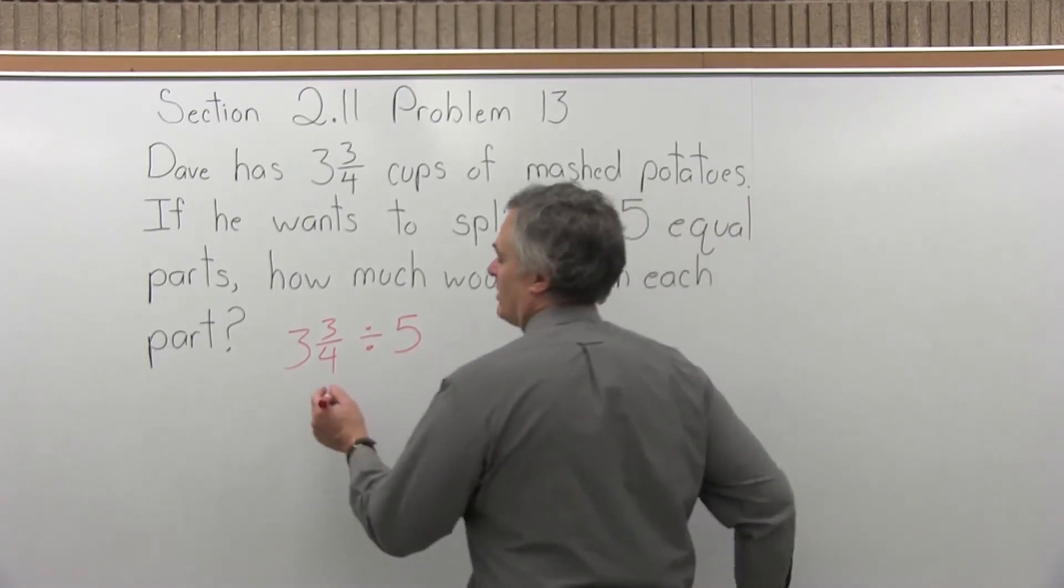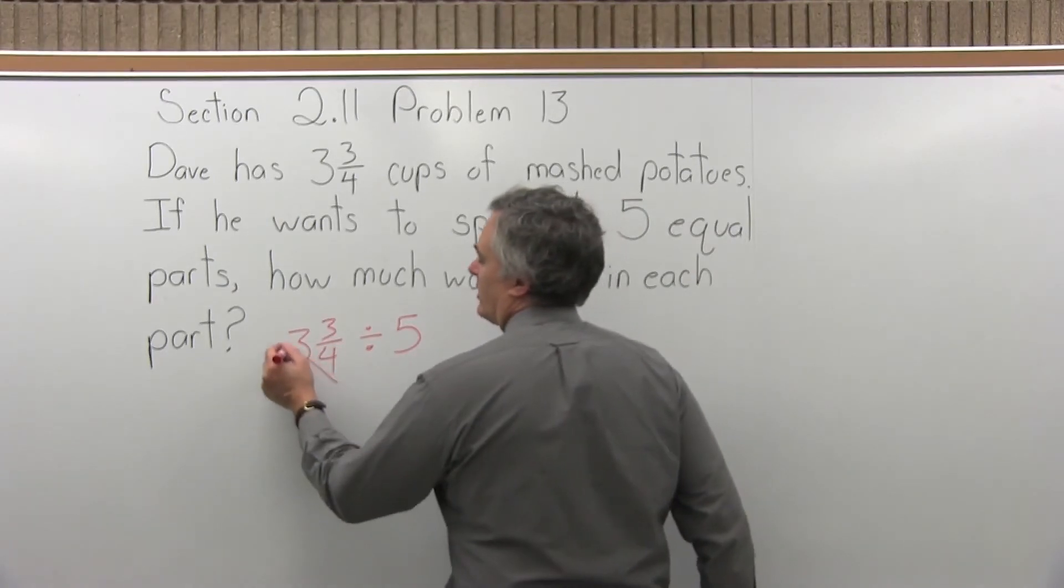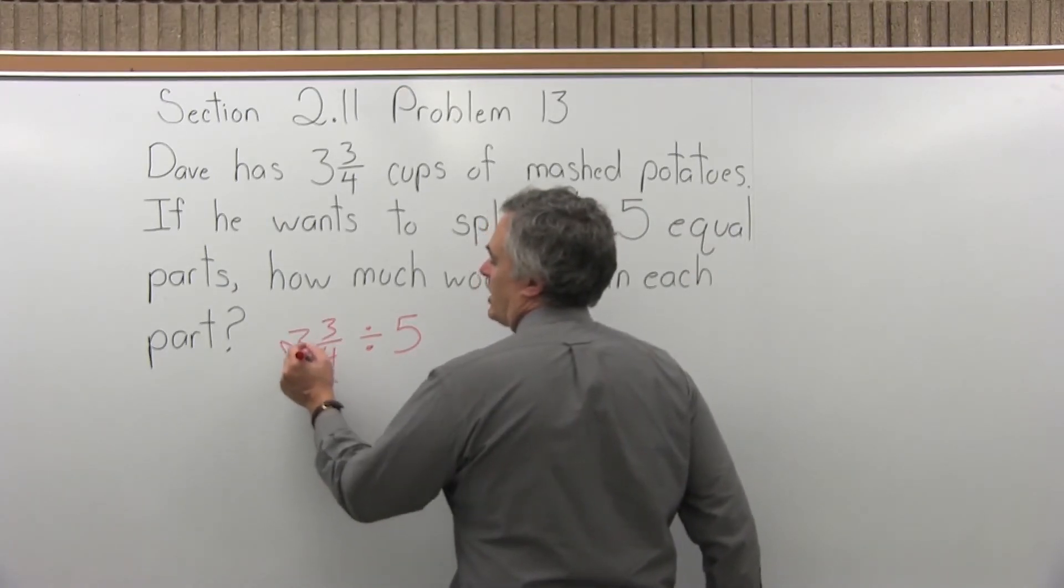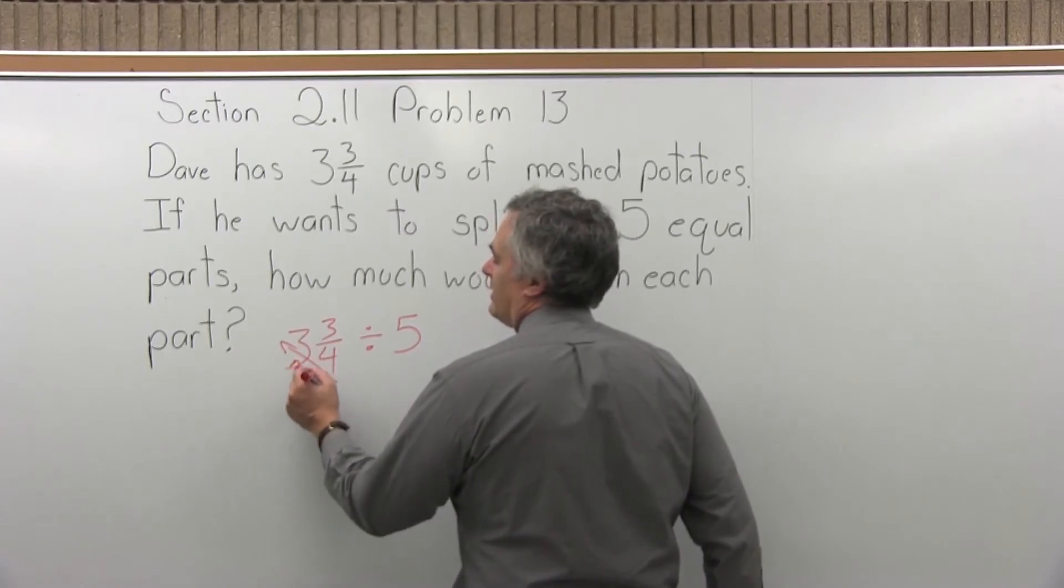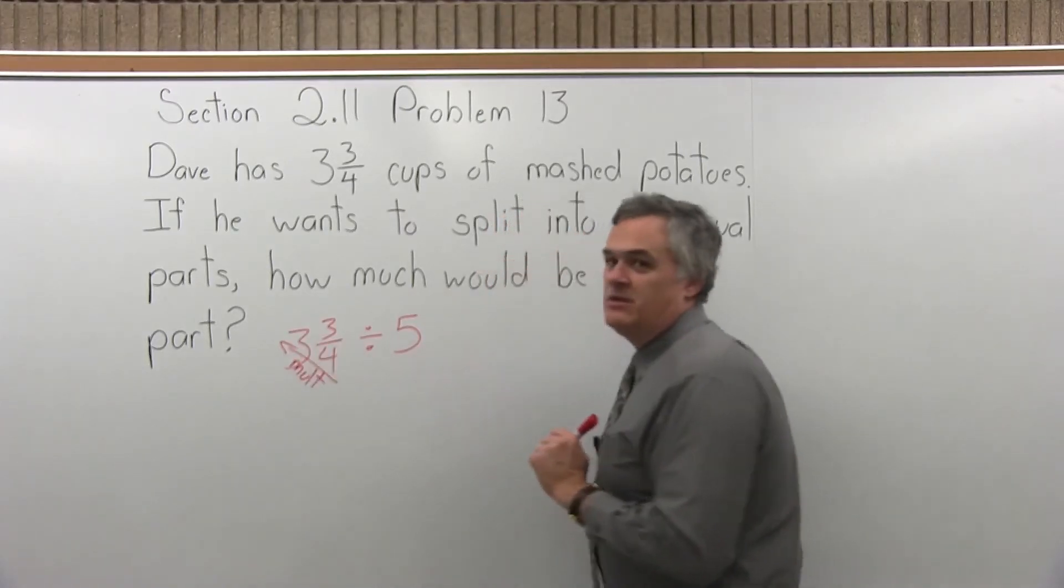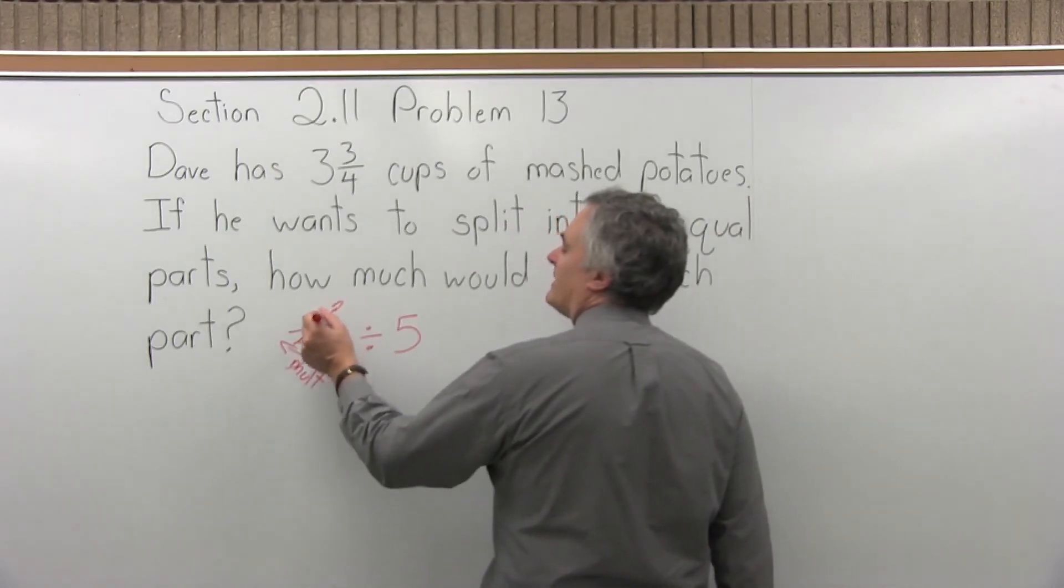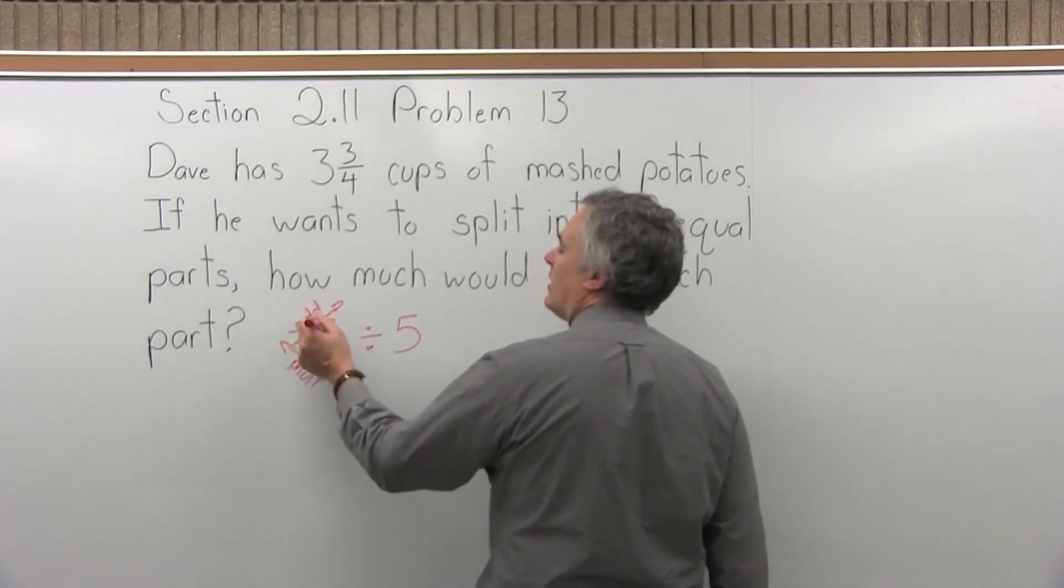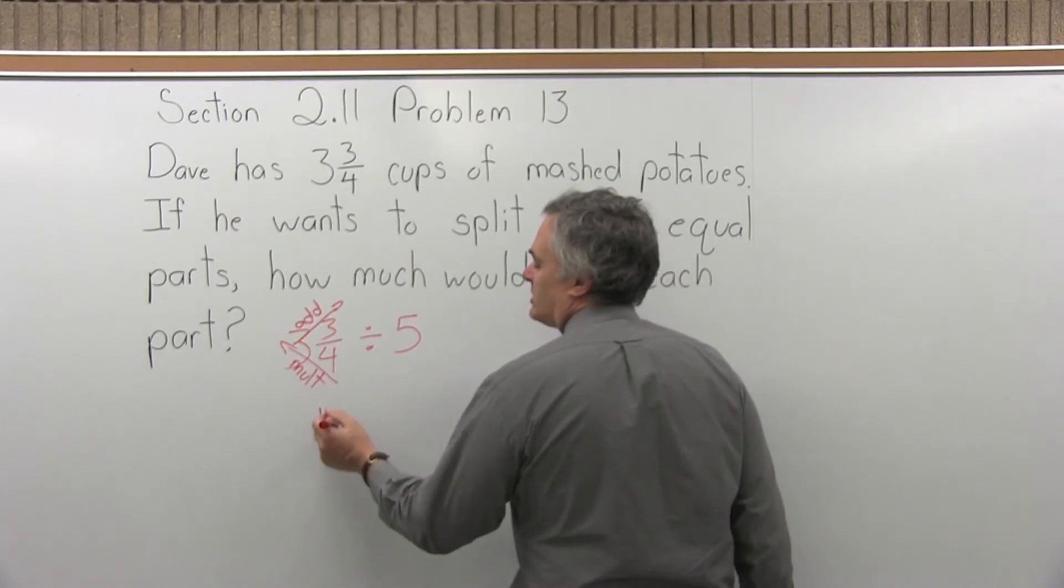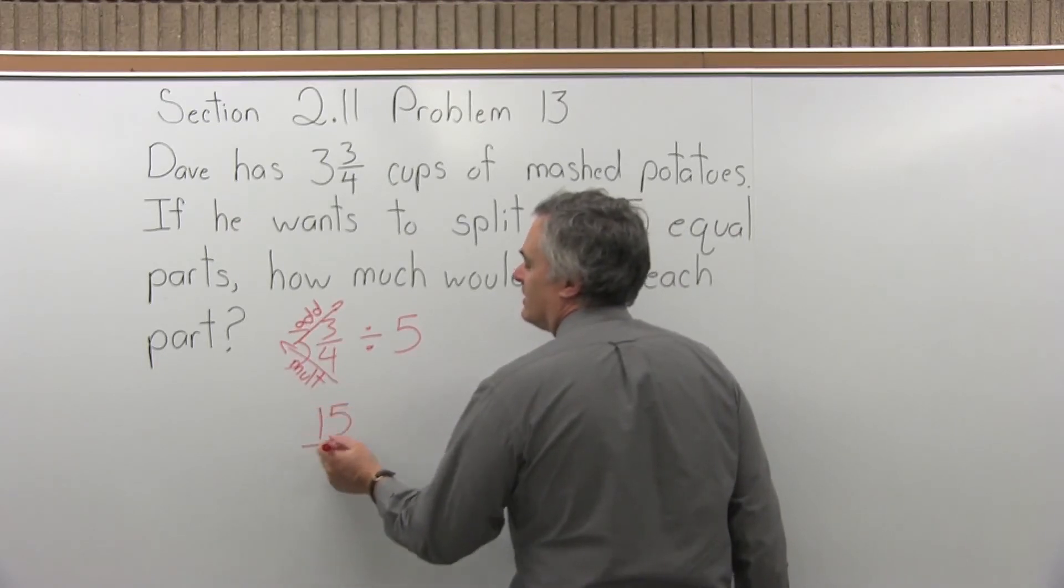So to start this problem, let's convert the three and three fourths. So coming from the denominator to the number in front, we will multiply. We'll multiply four times three, four times three gives me a result of twelve. I'll take that result of twelve and add it to the numerator, twelve plus three, twelve plus three will make a fifteen. The denominator stays the same, it was four.